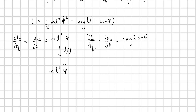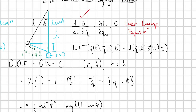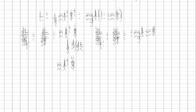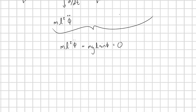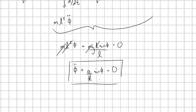Now we plug these into the Euler-Lagrange equation, taking the difference. We get ml²φ̈ + mgl·sin(φ) = 0. Dividing through by ml², we arrive at φ̈ + (g/l)·sin(φ) = 0. And there we go — that's the equation of motion for a simple pendulum. I hope you found this video helpful. If you did, consider subscribing to the channel. Thank you so much for watching.